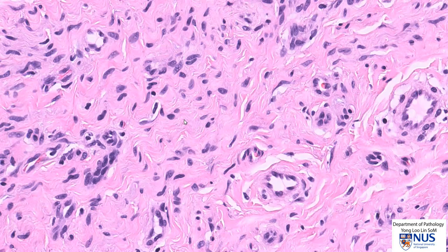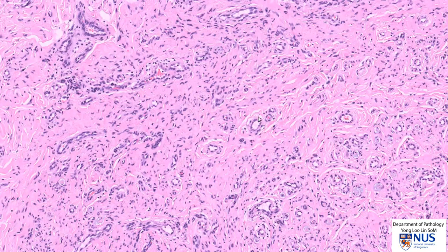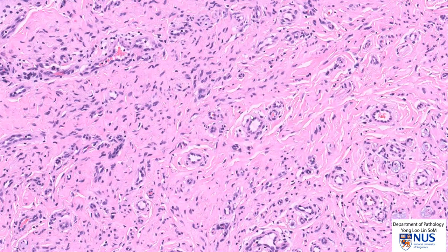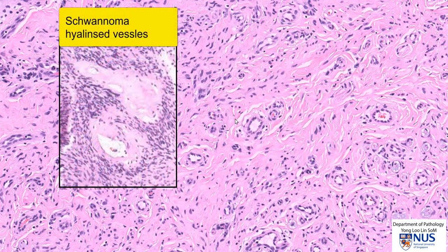In between the nuclei, we can see these pink collagen fibrils. So we have spindle cells and we have collagen. We also have some blood vessels, and these vessels are different from those seen in schwannoma. Often in schwannoma, the other benign peripheral nerve sheath tumor, the blood vessels have thickened, hyalinized, pinkish walls. These are just regular blood vessels.